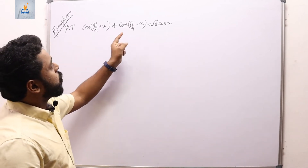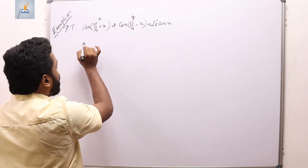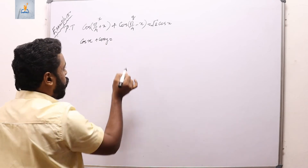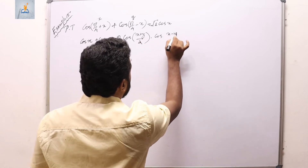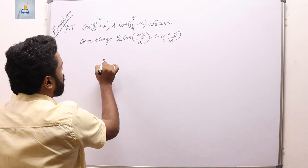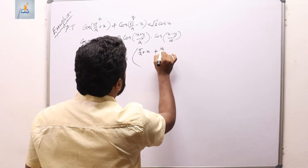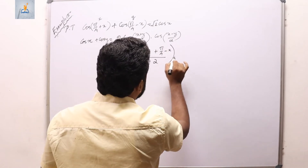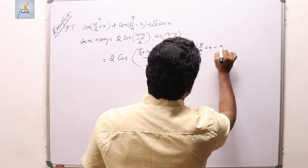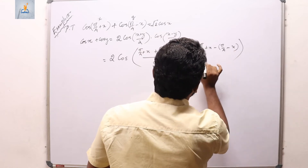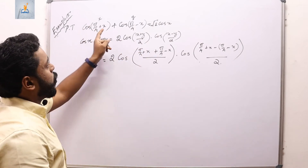Naming the angles as A and B, this is of the form cos A + cos B = 2·cos((A+B)/2)·cos((A−B)/2). Substituting: A = π/4 + x and B = π/4 − x. So we get 2·cos((π/4+x + π/4−x)/2)·cos((π/4+x − π/4+x)/2).